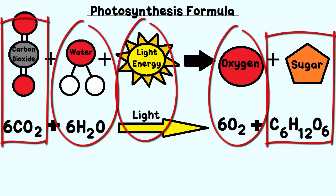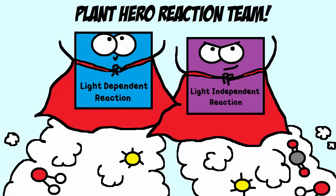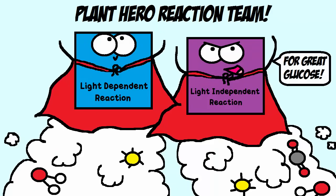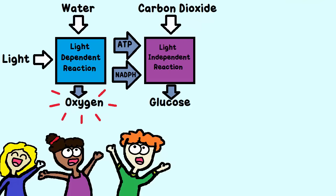Together, the light-dependent reaction and the light-independent reaction, which happens simultaneously, create the glucose that plants need to survive. The process of photosynthesis is necessary for plants to make sugar. Photosynthesis also supplies organisms with the oxygen they need because, remember, oxygen was a product.